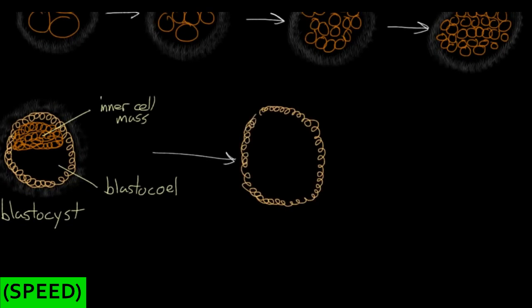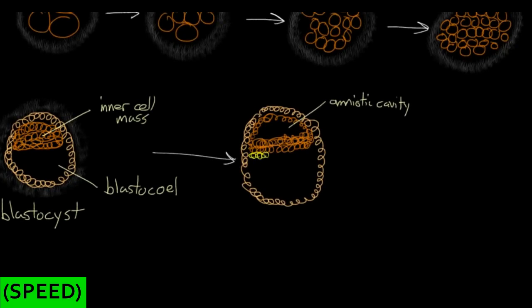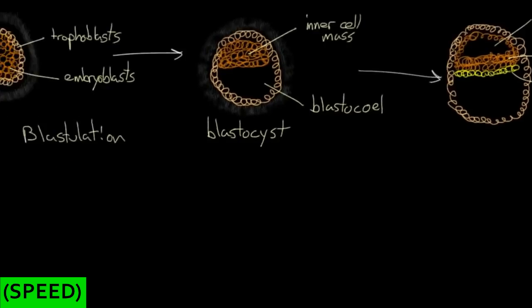Now we'll draw our trophoblasts completely naked without a zona pellucida. More interesting things are happening — your inner cell mass of embryoblasts is starting to look a little bit different. You still have this rim on the outside at the end of your blastocyst, and you still have this mass here in the middle. But you've developed another cavity, and that cavity is called the amniotic cavity. Also, your inner cell mass of embryoblasts has started to differentiate more — it's got a layer on the bottom called hypoblasts, while the cells in the layer just above it are called epiblasts.